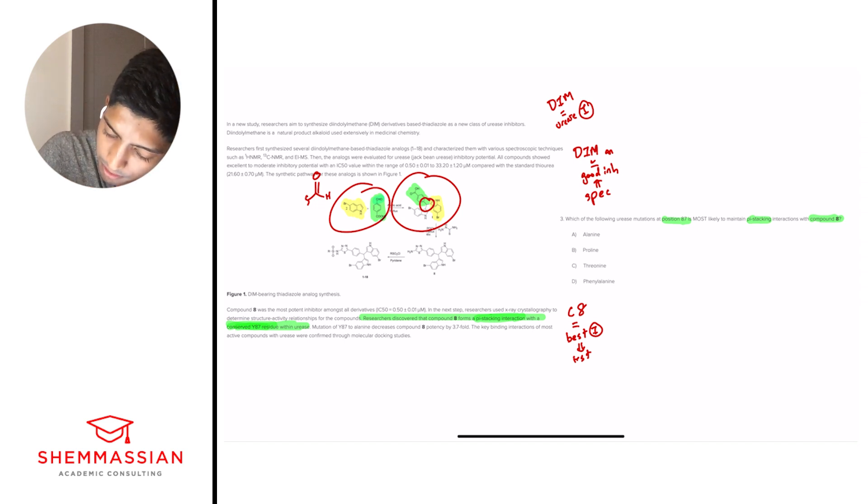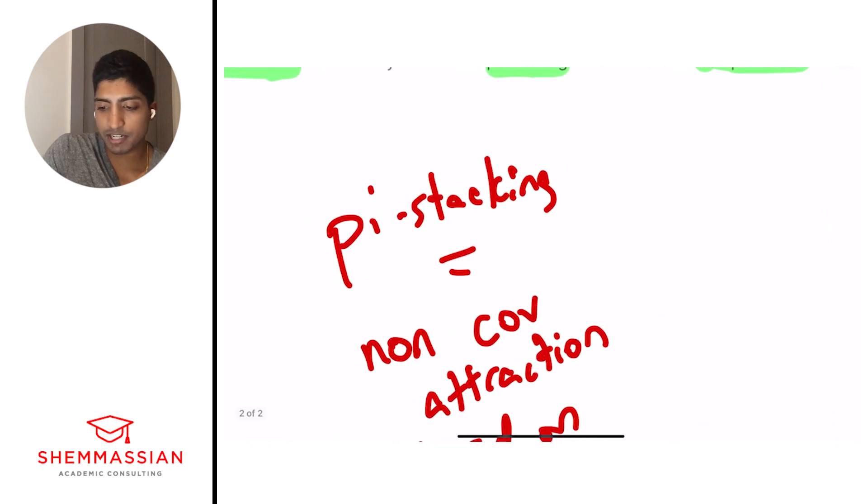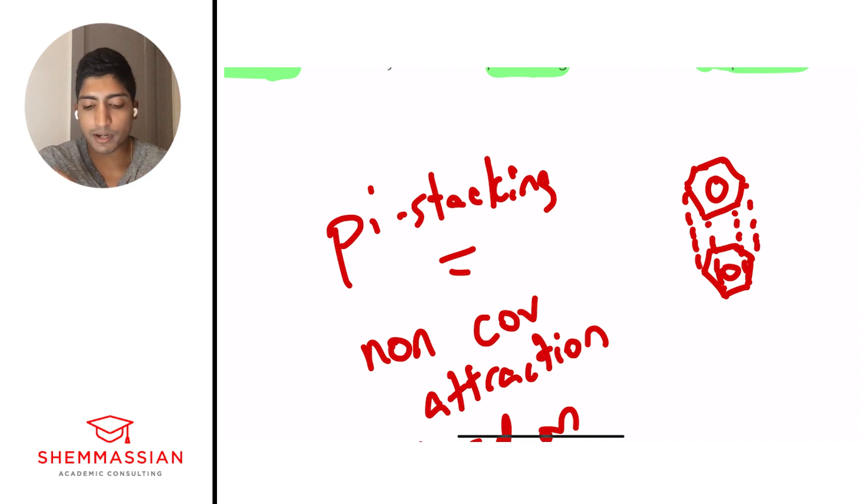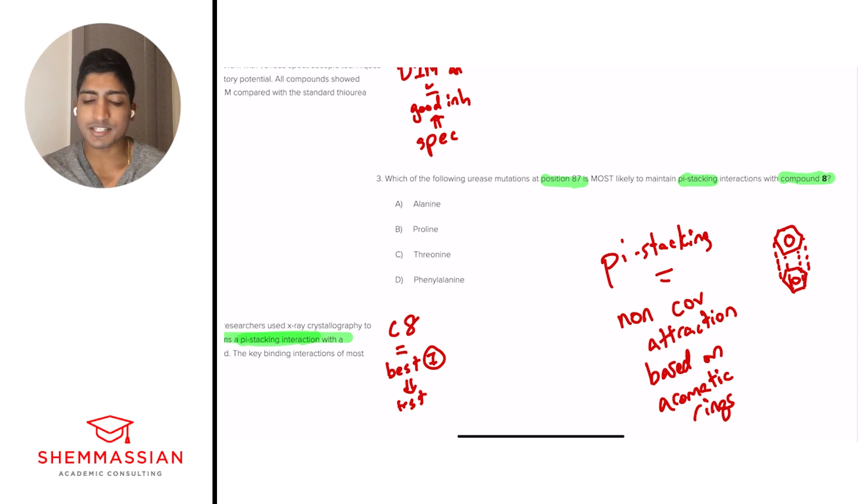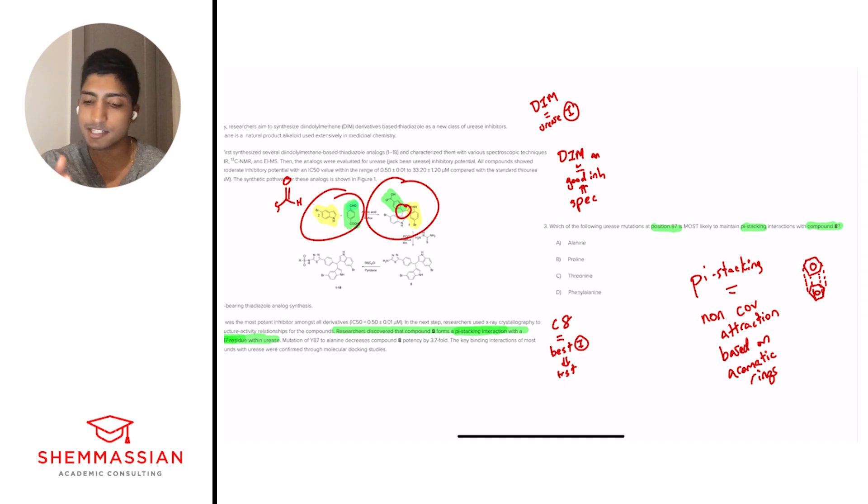So researchers discovered that compound 8 forms pi-stacking interaction with the conserved Y87 residue within urease. So this is our staple sentence, and we're going to come back to it by thinking of what is pi-stacking. It says we have it maintained with this Y87 residue, but what is pi-stacking? Well, pi-stacking, if you remember, is a non-covalent attraction based on aromatic rings. So the idea is that when compounds have these aromatic rings in different residues, they sort of align and then stabilize because they align so well. And so this is a form of attraction, a special form of attraction that's only related to aromatic rings.